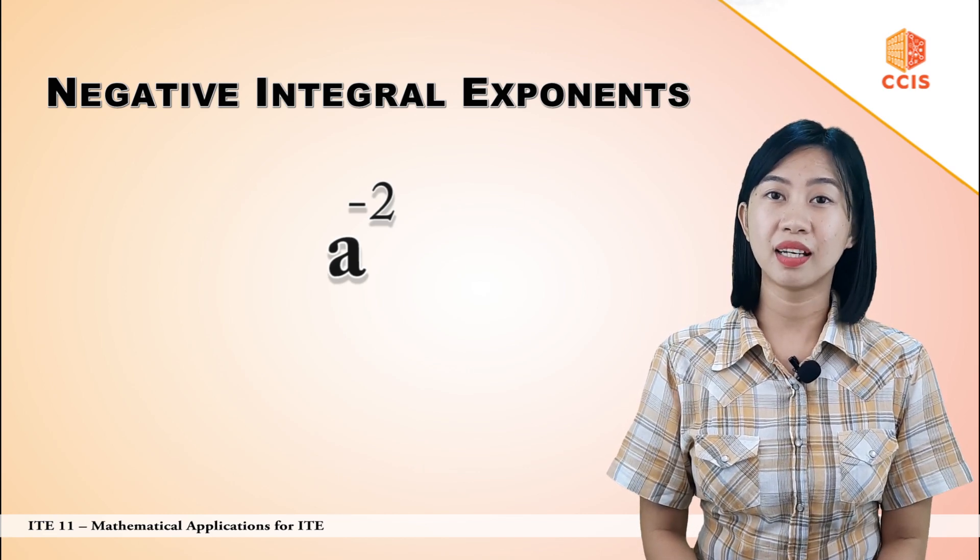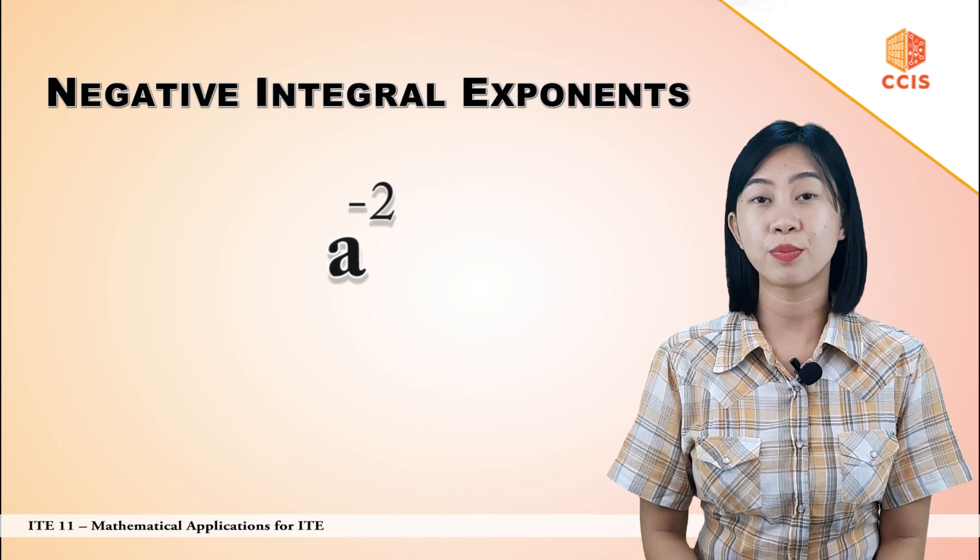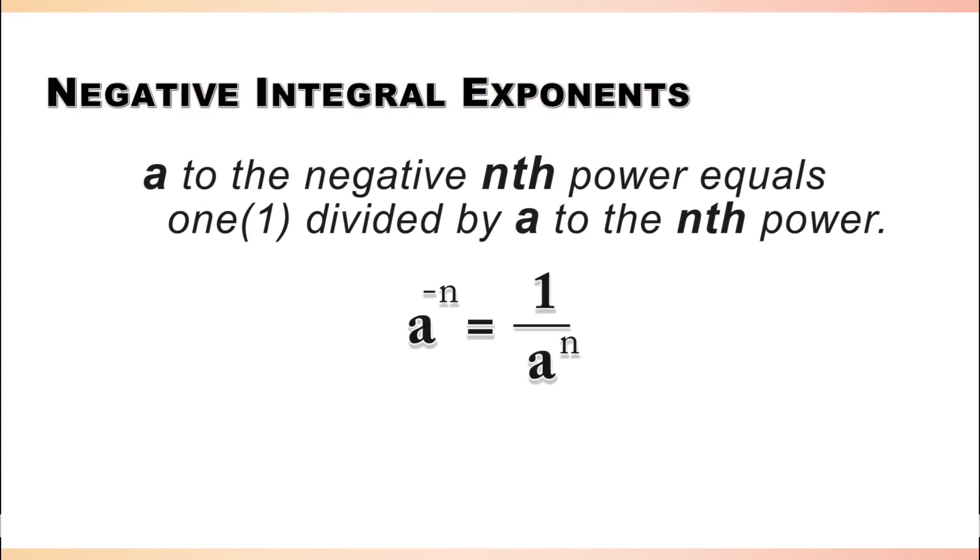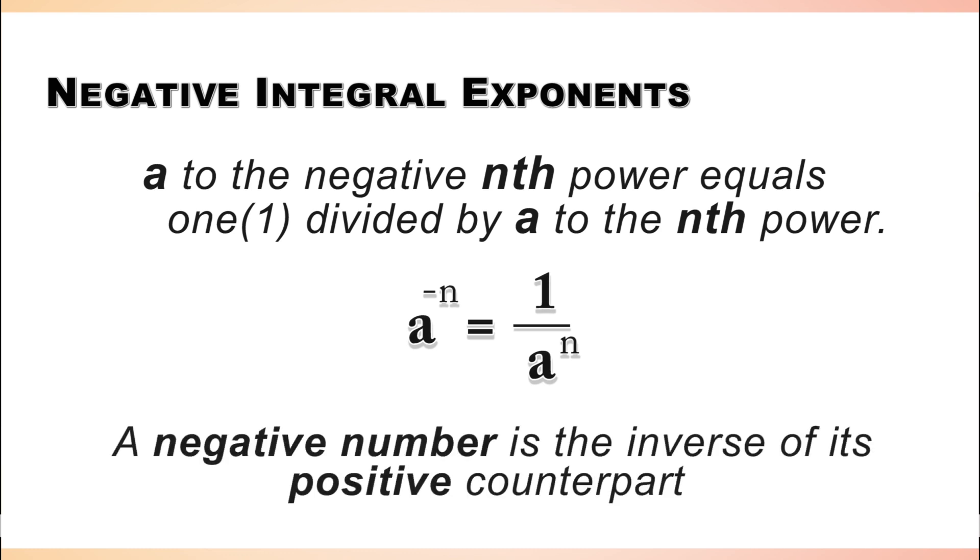To interpret a negative exponent, we use this property: a to the negative nth power is equal to 1 divided by a to the nth power. This makes sense as a negative number is the inverse of its positive counterpart.